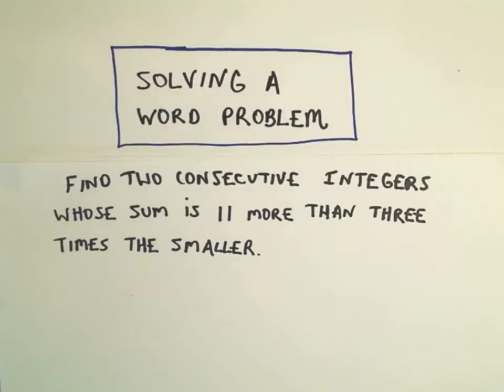In this video I want to do an example of solving a word problem about consecutive integers. We want to find two consecutive integers whose sum is 11 more than 3 times the smaller.